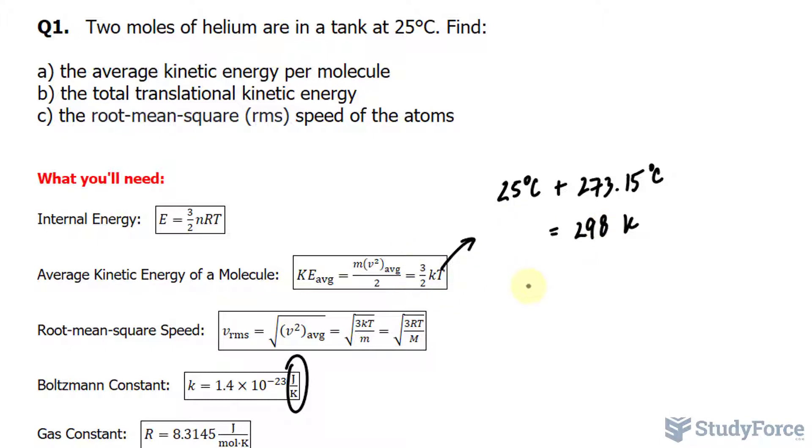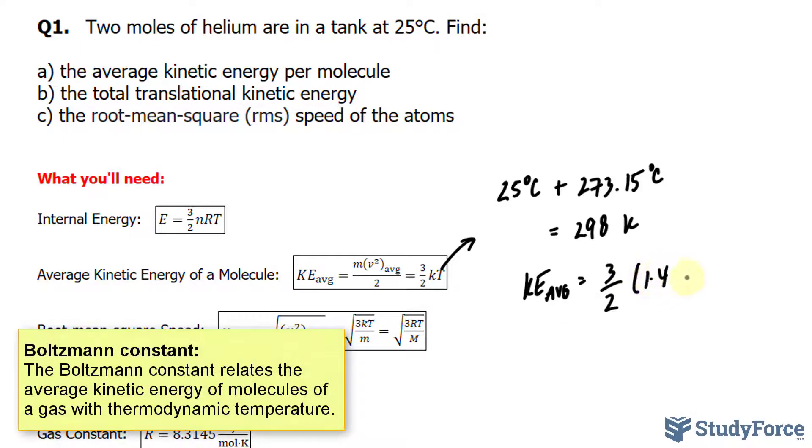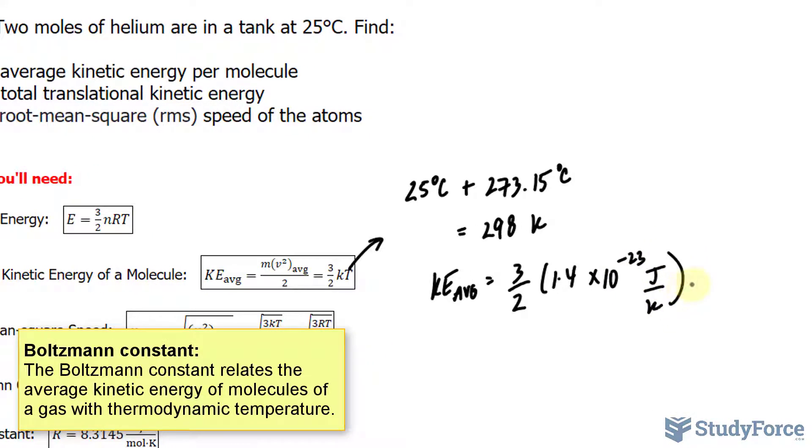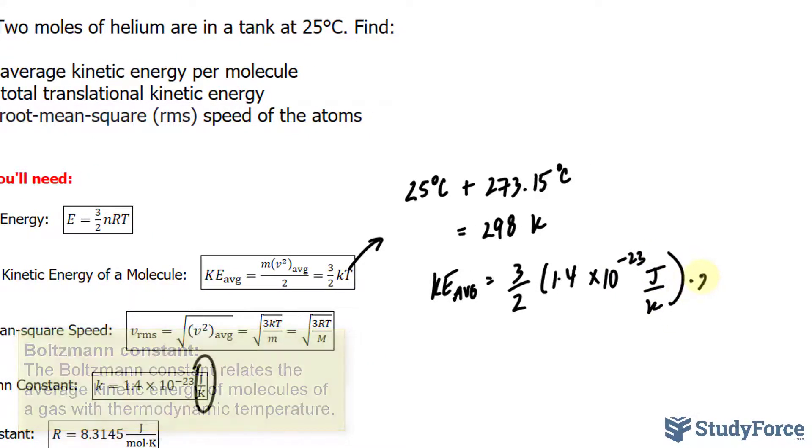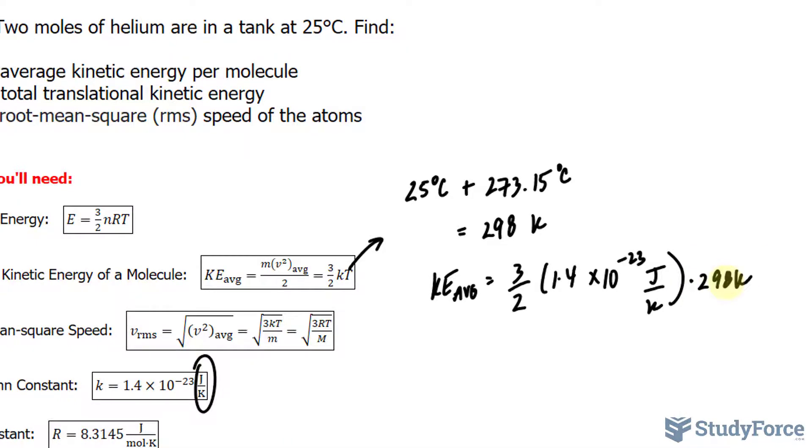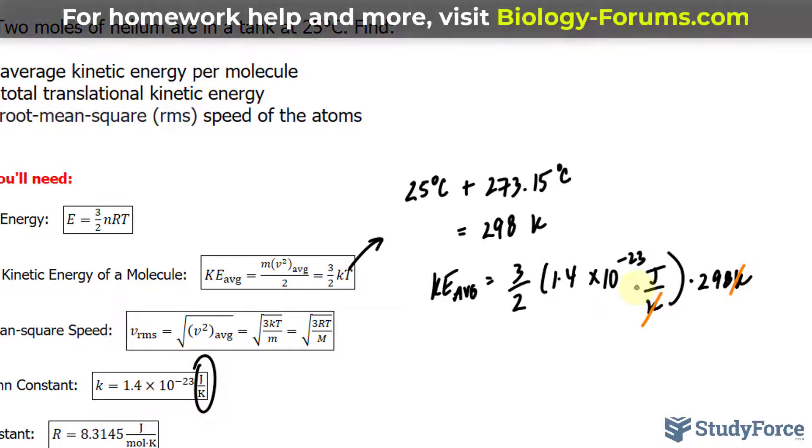And according to this formula, to find out the average kinetic energy, we will take a factor of 3 over 2 multiplied to Boltzmann constant, which is 1.4 times 10 to the power of negative 23 joules per Kelvin. And subsequently, we multiply that to 298 Kelvin. Notice that our final units will be in joules, which is what is expected since we're calculating energy. Let's use our calculator.